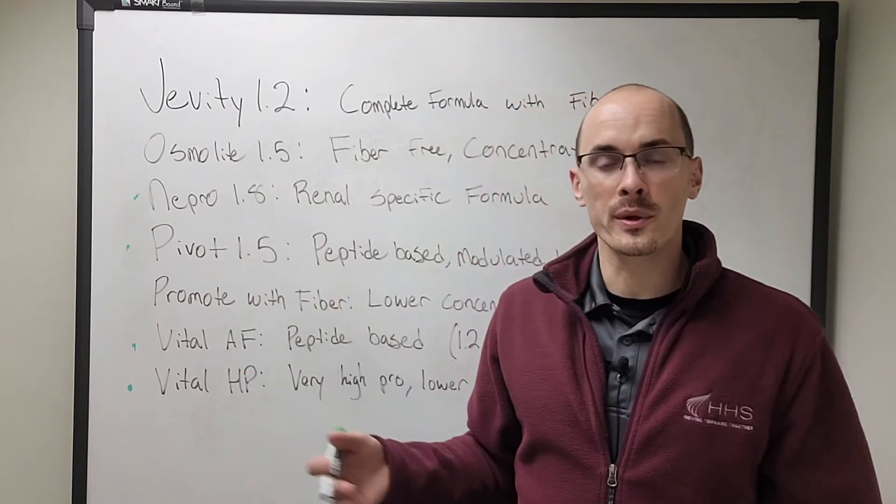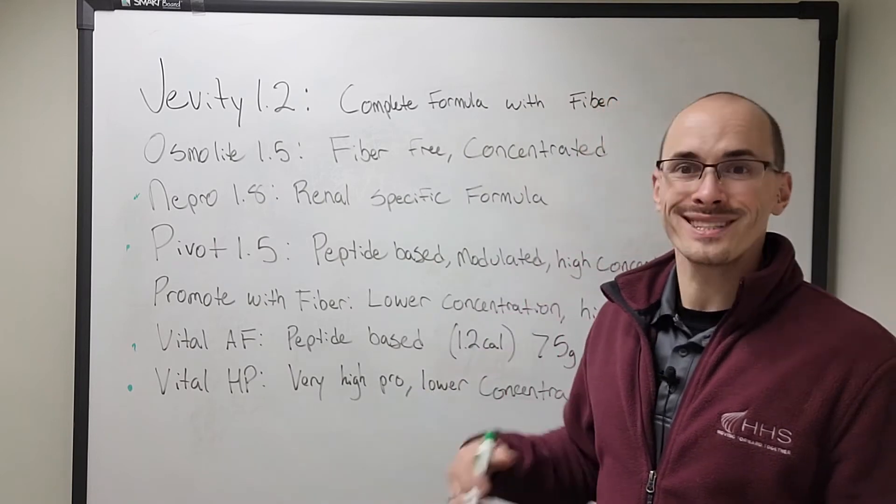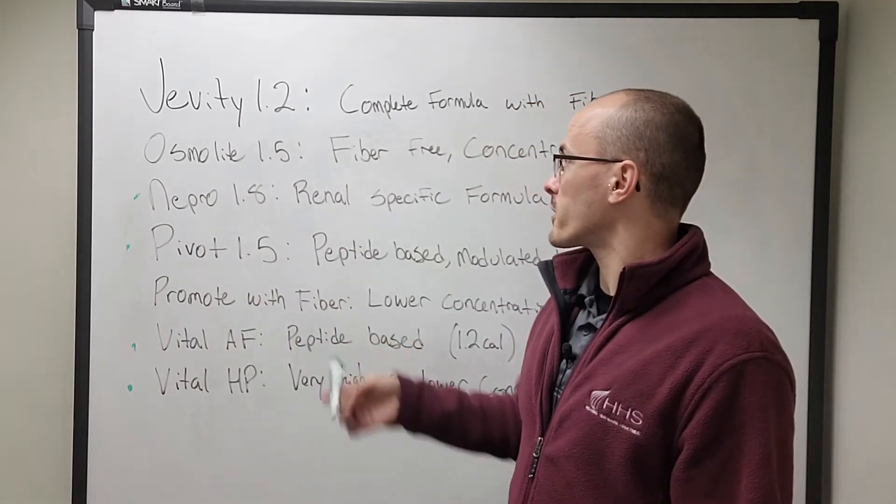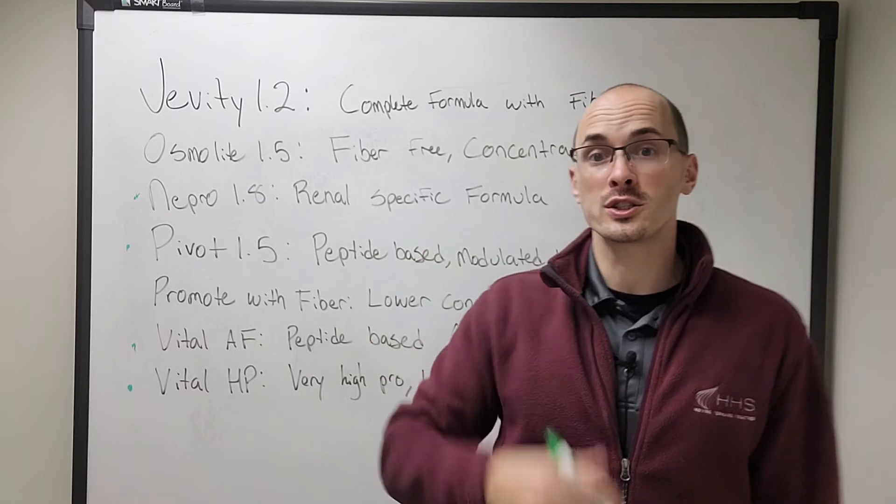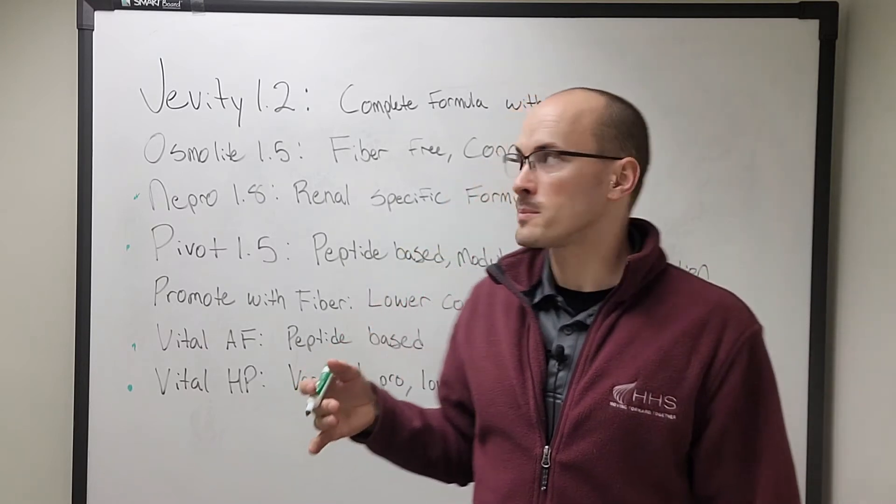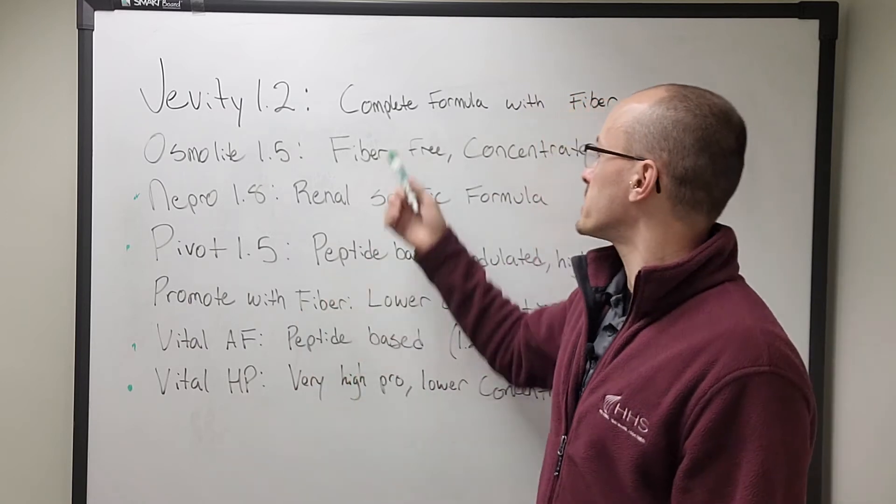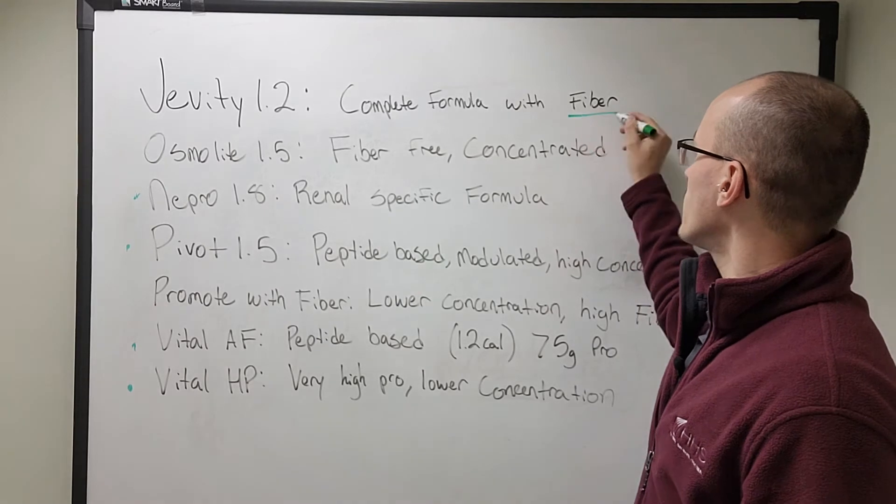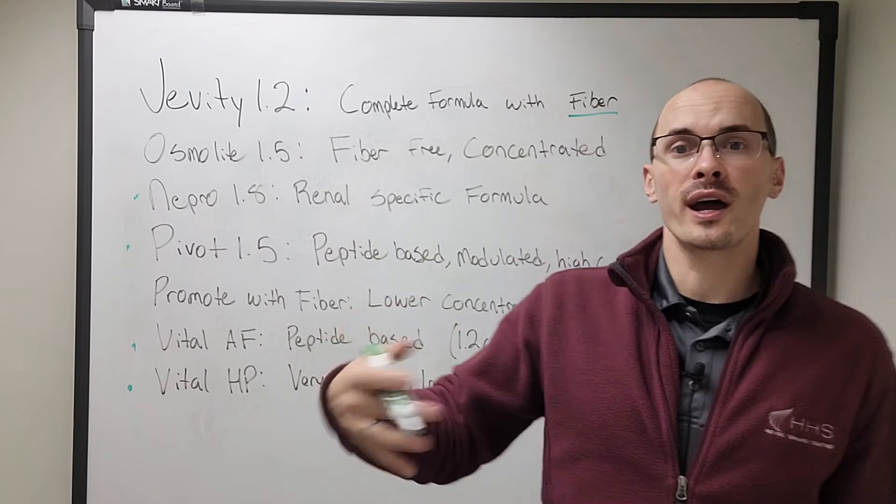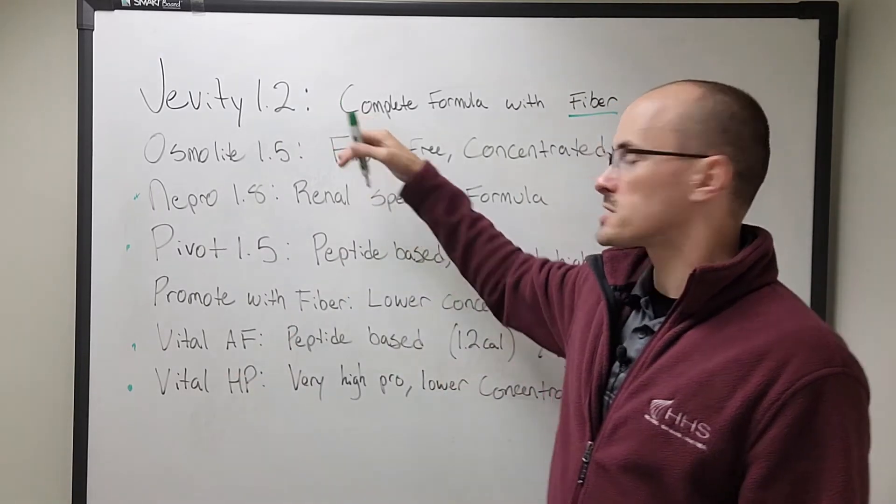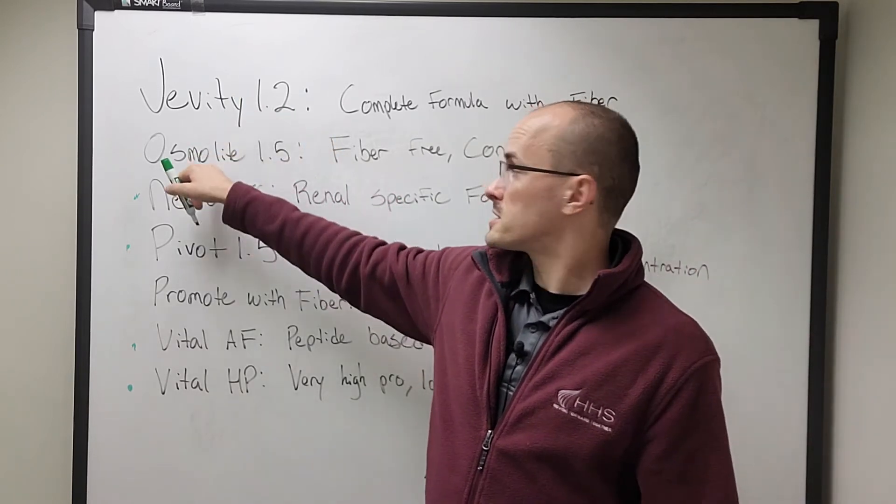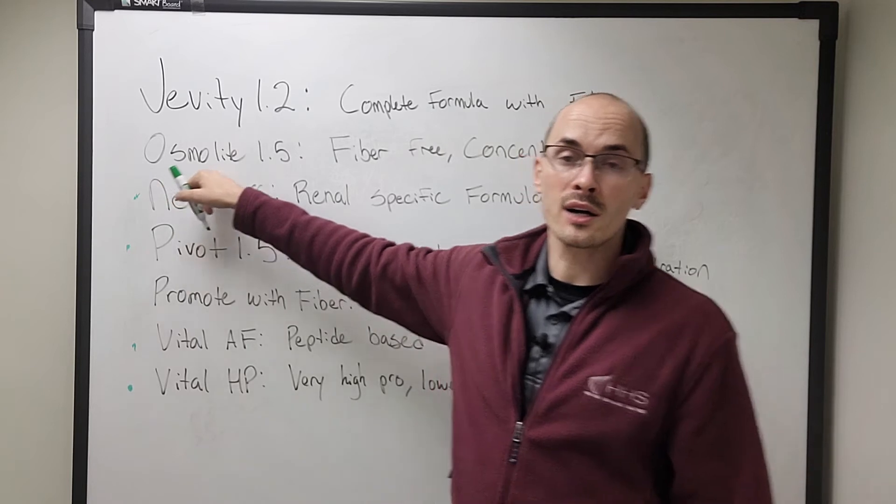Now we're left with three other formulas that are just considered your complete intact formulas. This is Jevity, Osmolyte, and Promote. And these are all very different. Our Jevity 1.2, that's a 1.2 calorie concentration. It's got 55.5 grams of protein per liter. So moderate calorie, moderate protein. It's a complete formula, but it has fiber. So for most of our patients, this will meet a lot of their needs while providing fiber. So long-term tube feeders, this would be a great option. Now, if you have a patient that needs this, but without the fiber, see if you have Osmolyte on hand.